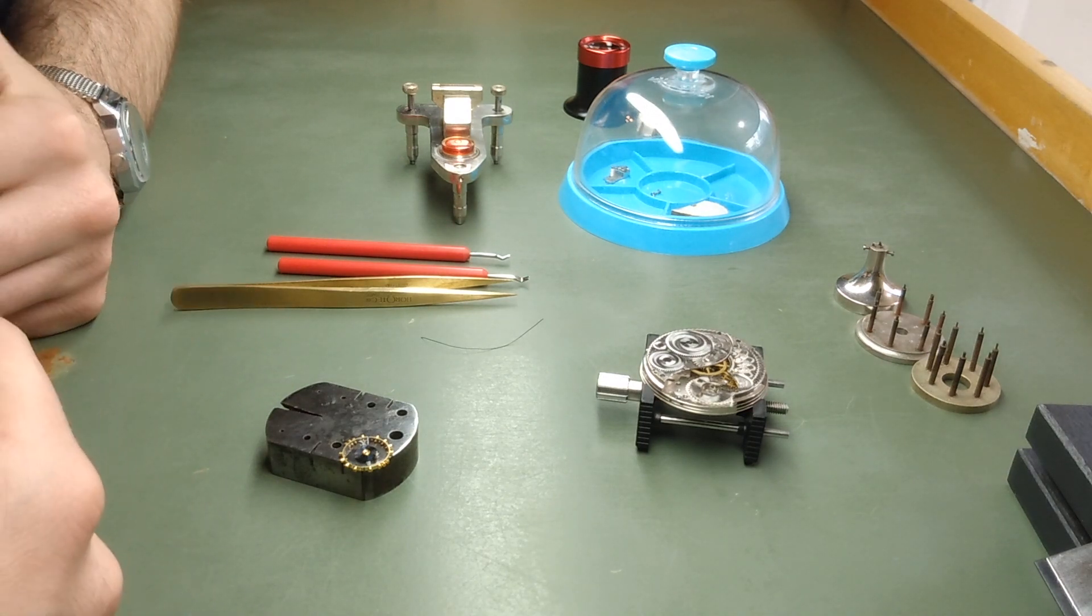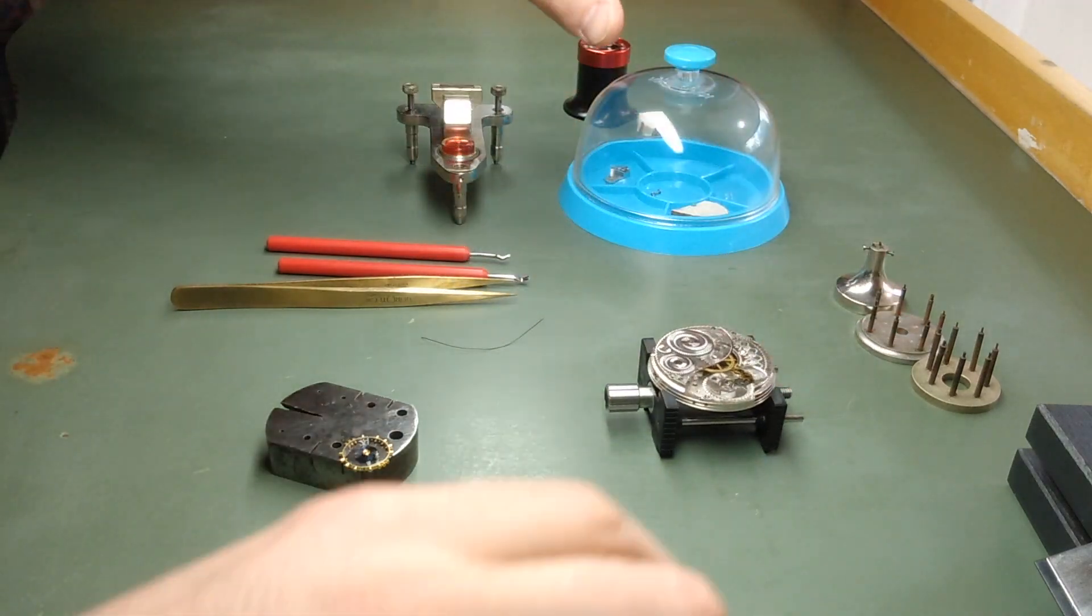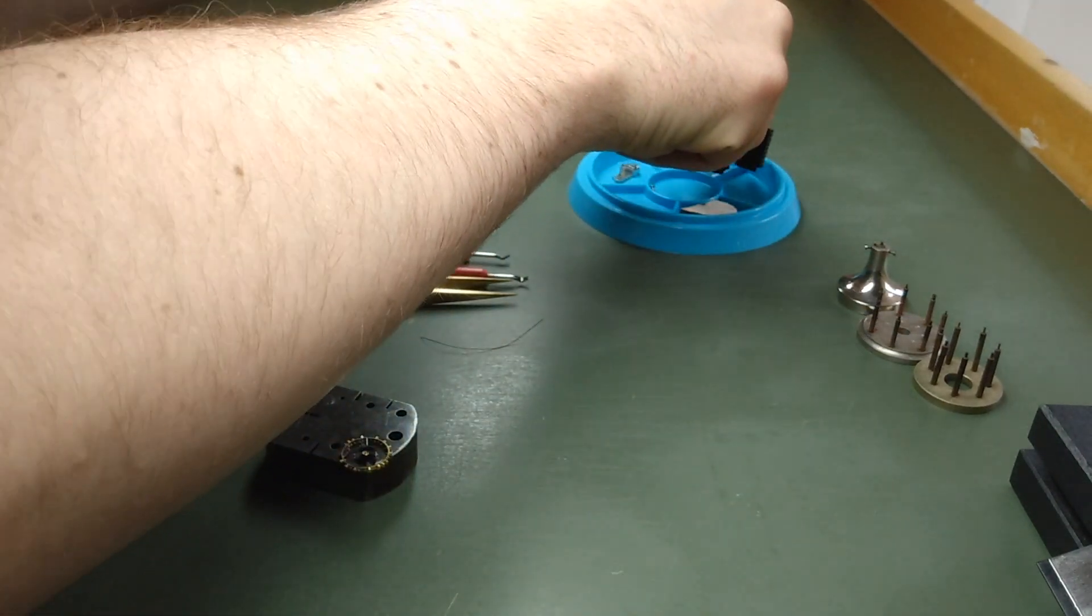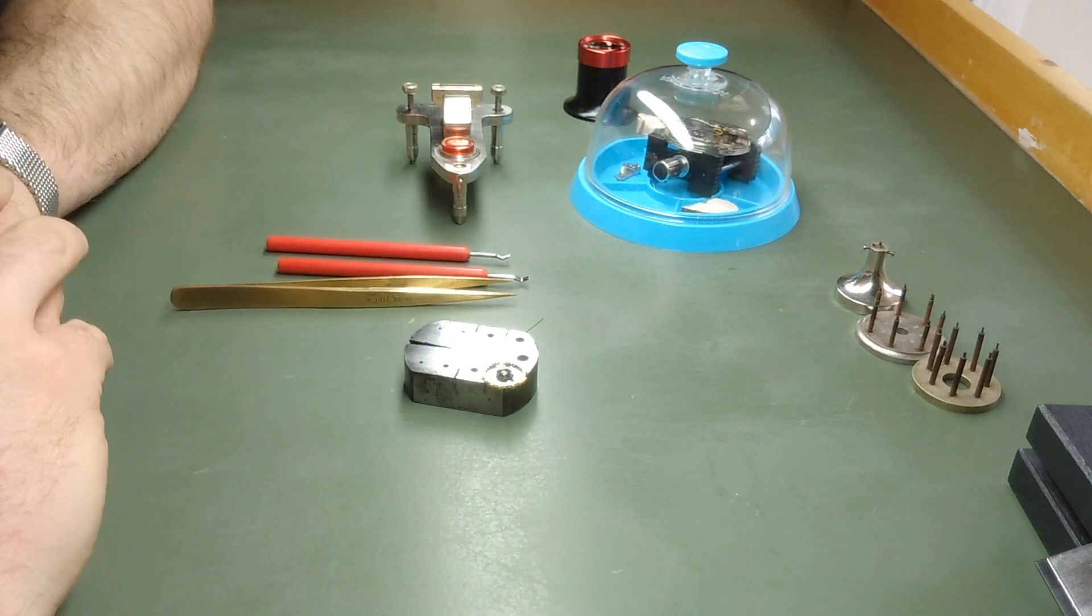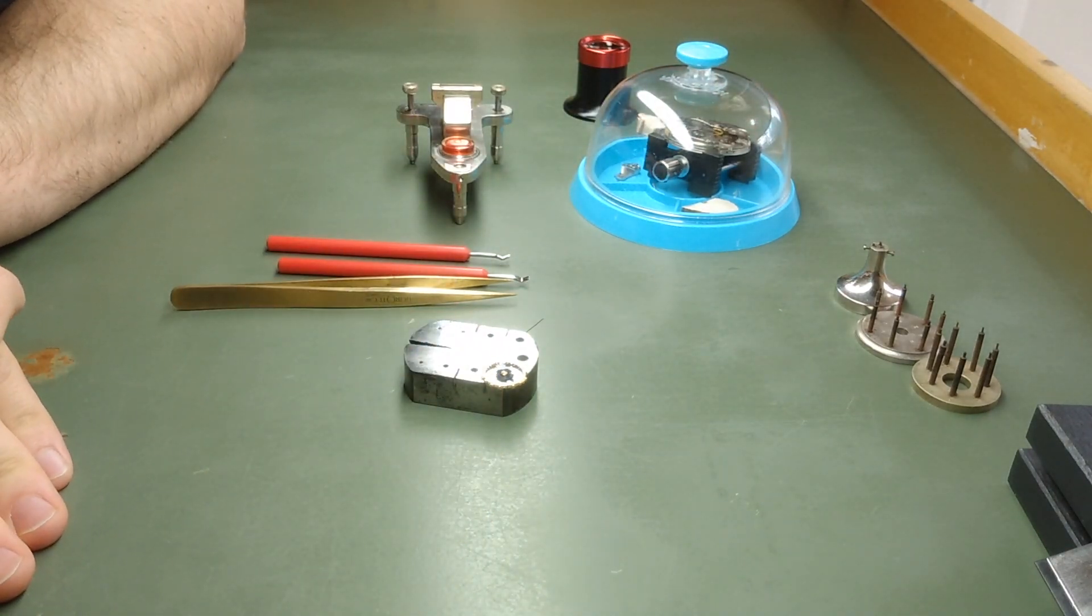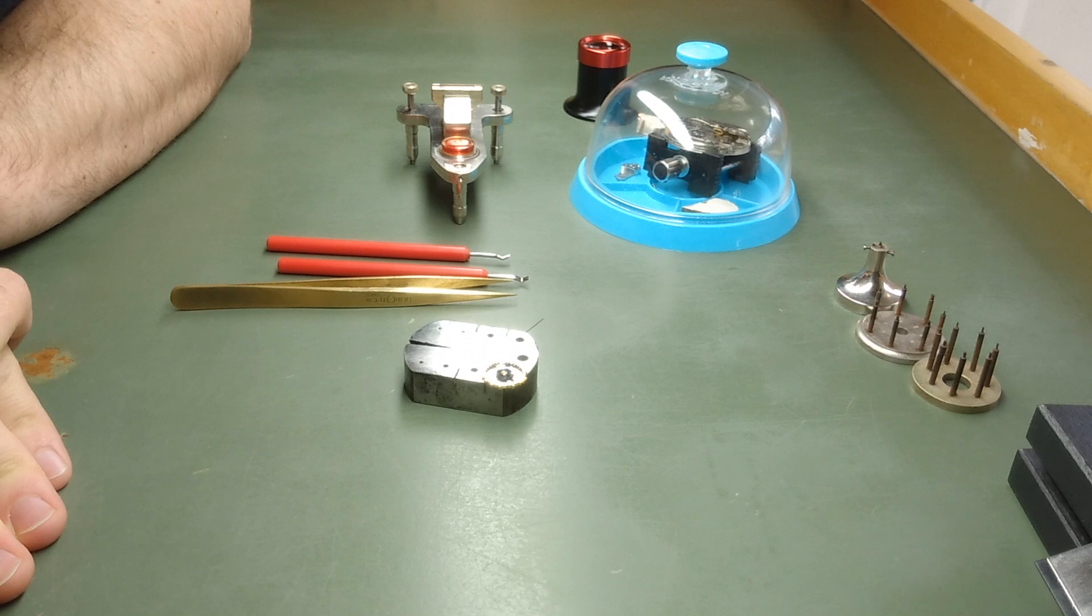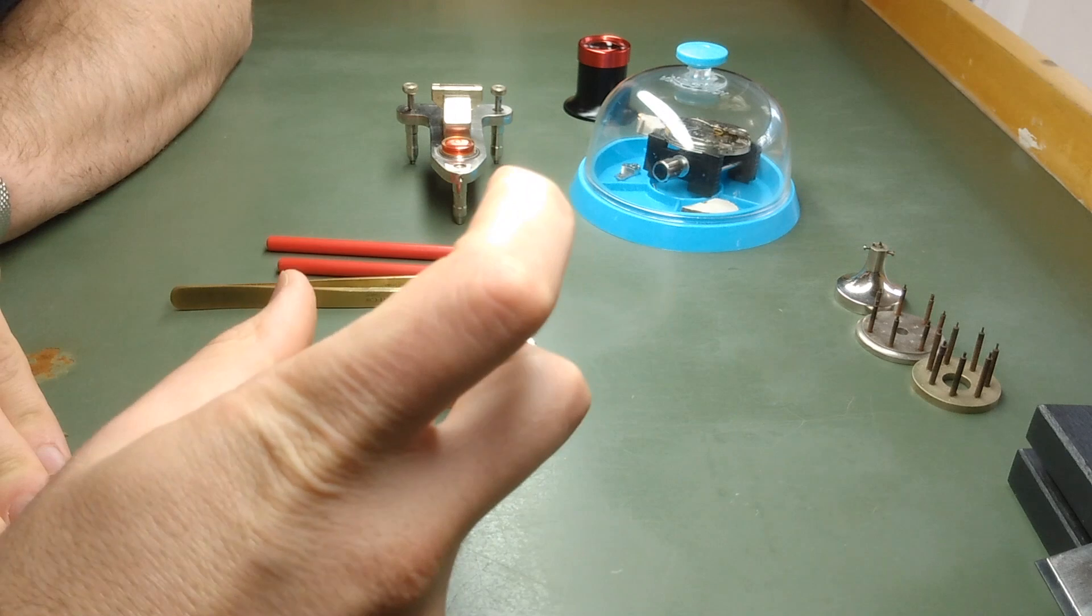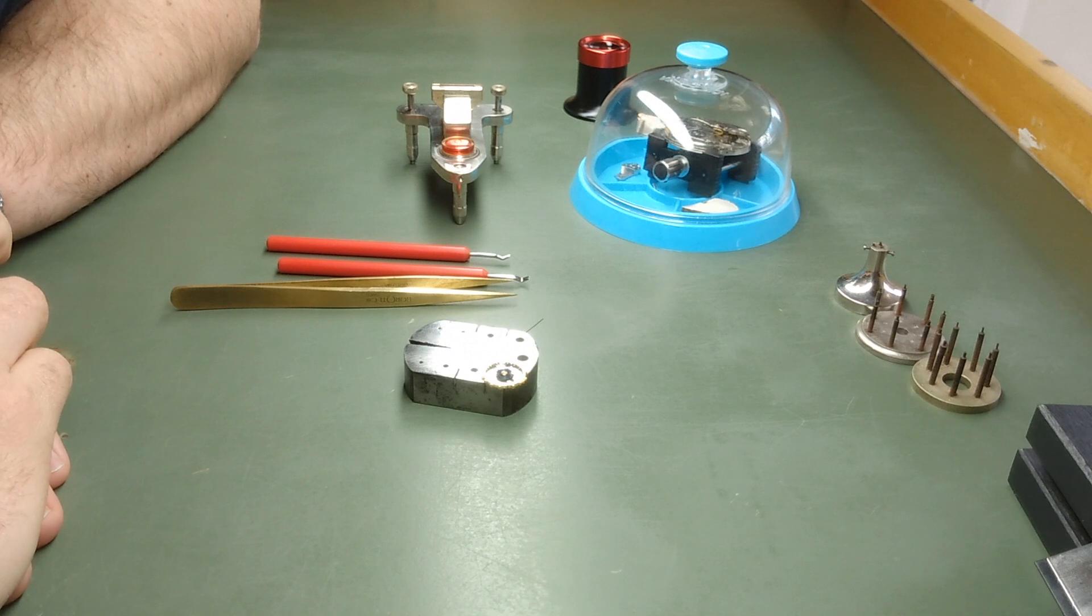So a hairspring and a balance wheel, they go together. When you make a balance wheel, the hairspring, the small coiled spring, is fitted to a particular balance wheel. So the length of the spring is cut for the appropriate weight of the balance wheel to make sure that the balance vibrates or oscillates the appropriate number of times per hour. In the case of this watch, 18,000.